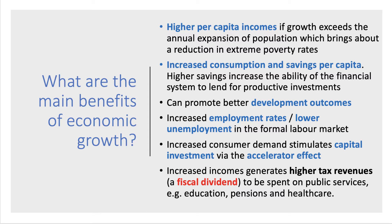Let's pick out six key points. First of all, growth can lead to higher per capita incomes, particularly if the pace of increase of GDP is faster than the natural growth of population. Higher per capita incomes of course help to bring down extreme poverty levels.